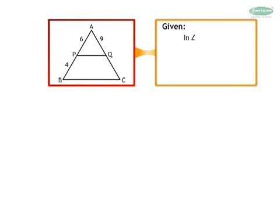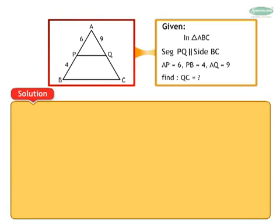It is given that in triangle ABC, segment PQ is parallel to side BC. AP is equal to 6, PB is equal to 4, AQ is equal to 9. Find QC.